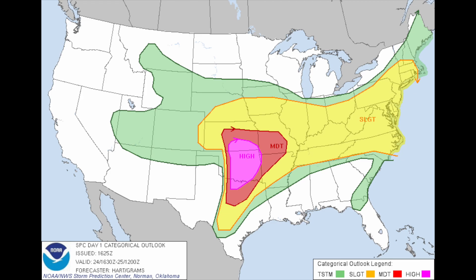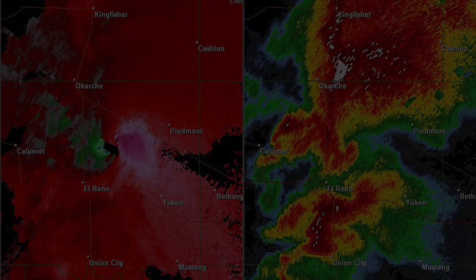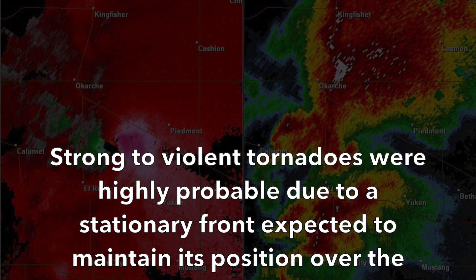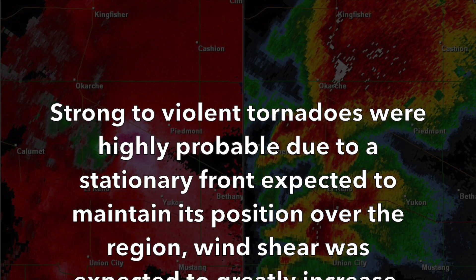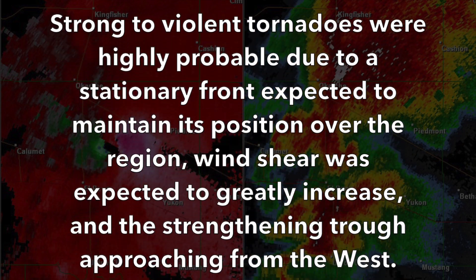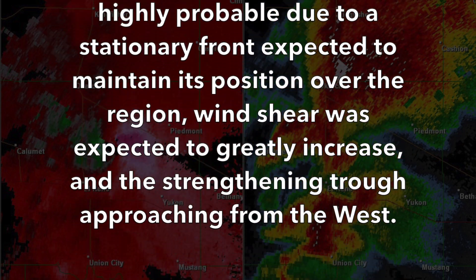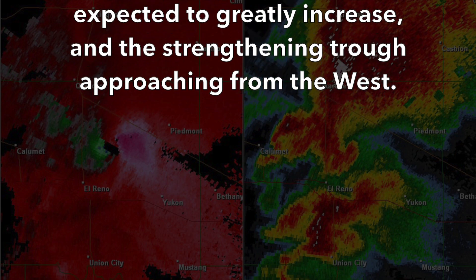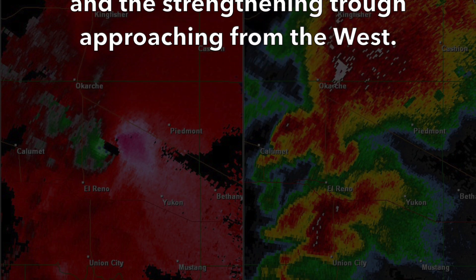Scattered stratus clouds were forming, along with increasing winds at the surface and aloft. The Storm Prediction Center issued a high risk of severe storms east of the dry line for parts of south-central Kansas, central and eastern Oklahoma, and extreme north-central Texas. Strong to violent tornadoes were highly probable due to a stationary front expected to maintain its position over the region, and wind shear was expected to greatly increase with the strengthening trough approaching from the west.